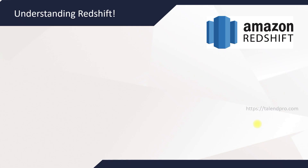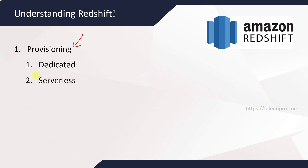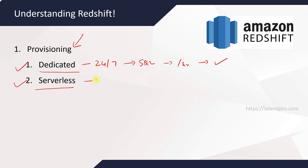Let's get started. Let us start with understanding Redshift first. When it comes to provisioning a Redshift cluster, there are two choices: one is having a dedicated Redshift cluster, and having your Redshift processing done on a serverless machine. Dedicated means it is provisioned 24/7 and you can run any SQL queries throughout your day, whereas serverless is mostly on-demand basis.